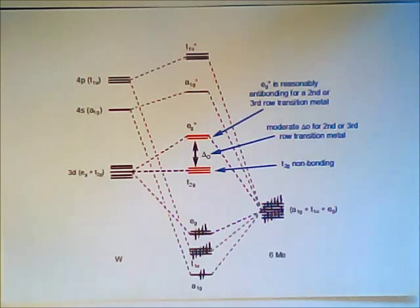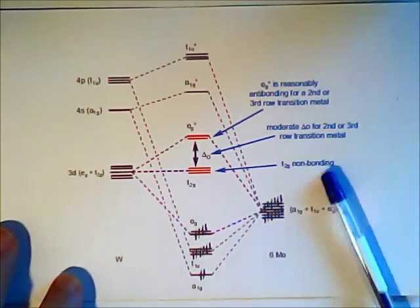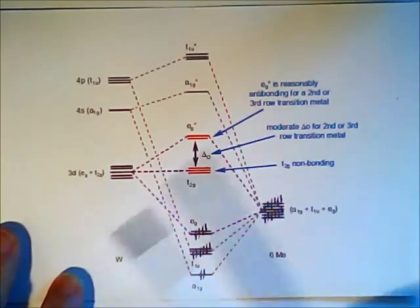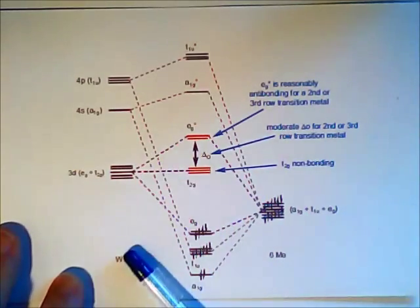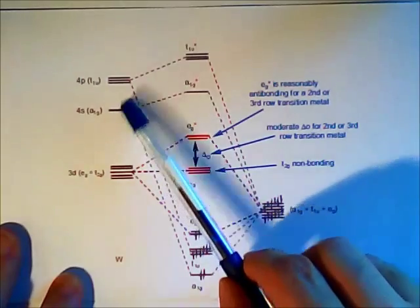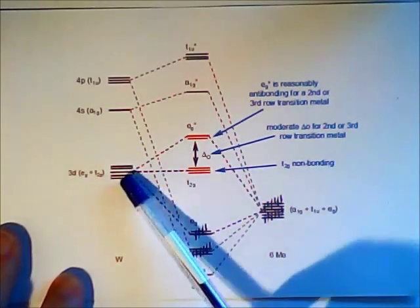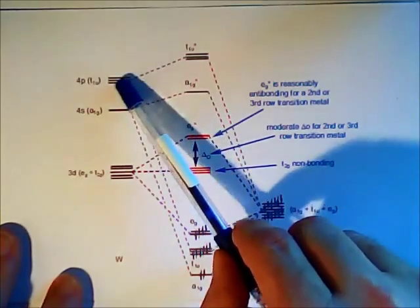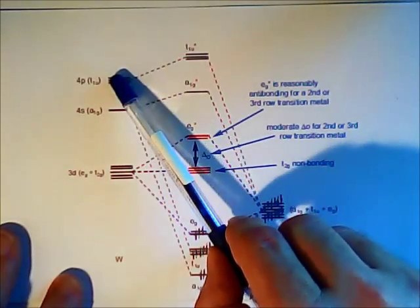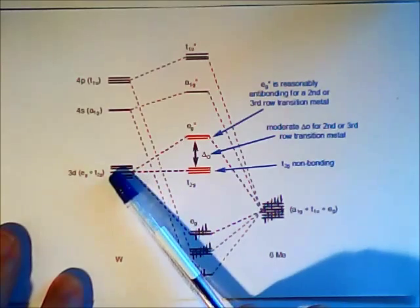How can we explain that these 18 electrons make a stable complex? We should draw back to the ligand field theory. Please watch my video about this subject if you haven't yet. In the ligand field theory or MO theory, we have the atomic orbitals of the metal on the left side. D orbitals, S and P. S and P are empty for transition metals; electrons are only here.